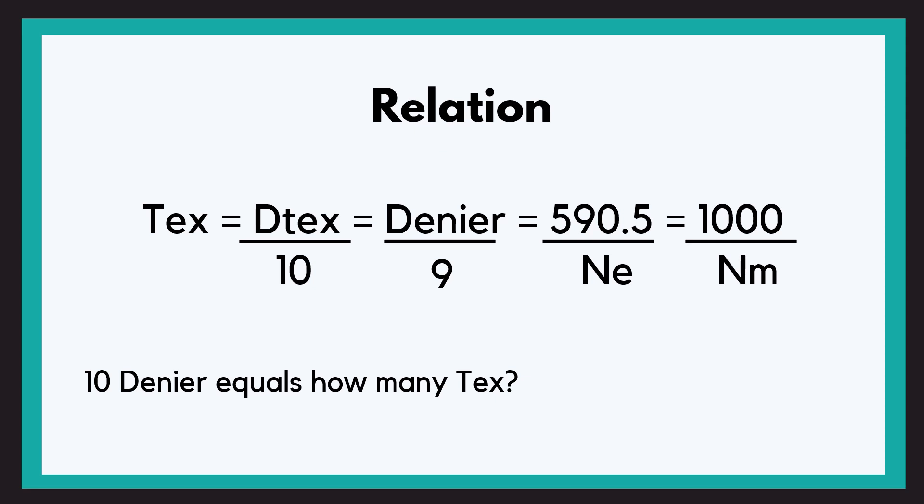If someone similarly asks 15 Ne equals how many DesiTex, you will put 15 in the place of Ne that's under 590.5 and then multiply it by 10 that is the denominator of DesiTex. There you go. This is simple mathematics now.